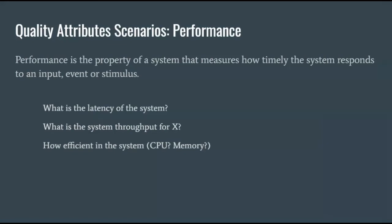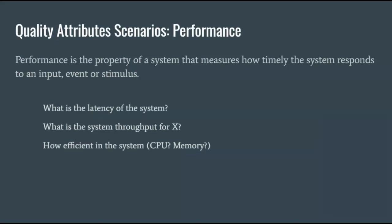Performance measures how quickly or efficiently a system is — what is the latency of the system, how much data can it handle, how much memory does it consume, and so on. For example, when the Voltron pilot steps on the accelerator of the Black Lion, under normal conditions, the lion accelerates from 0 to 60 miles per hour in 10 seconds.